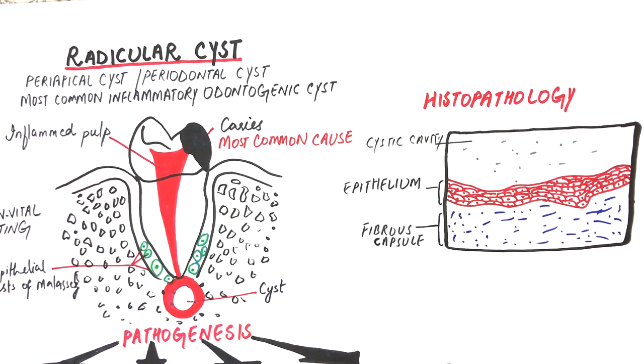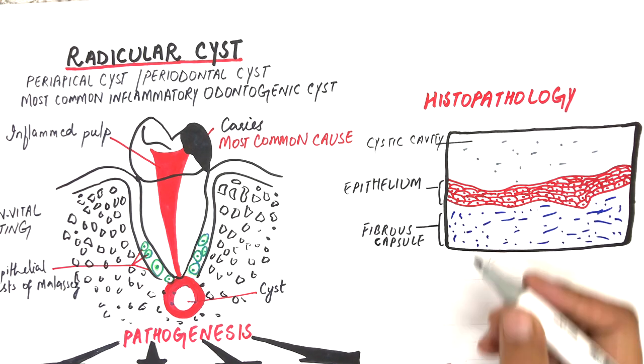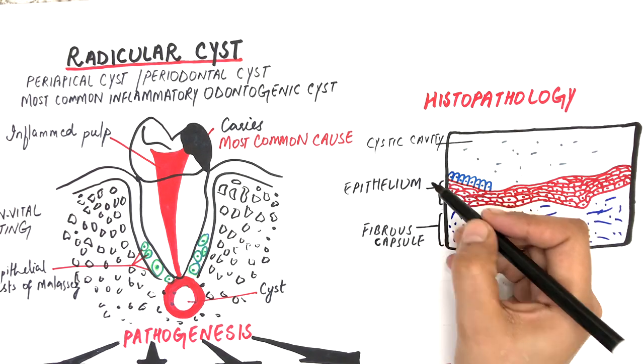The epithelial lining is about 6 to 20 cell layers in thickness. The thickness of the lining epithelium is not uniform throughout its periphery. Some mucus-secreting goblet cells resulting from the metaplasia of some cells of the lining epithelium can also be observed.